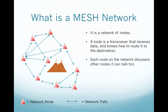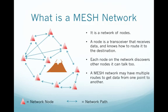Each node on the network discovers other nodes that it can talk to. Once you turn a node on, it will go out there and see what other nodes are available that it can talk to. It does that automatically with the software that's built into it. A mesh network may have multiple routes to get data from one point to another.